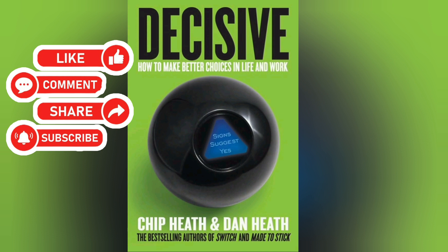Lesson 1: Decisions aren't binary — always think in opportunity costs. How many times has this happened? On Wednesday, someone starts talking about a party on Friday, and by Thursday, everyone's invited, including you. Now you have to decide what to do. Interestingly, how we decide something like this often ends with us trying to answer some variant of this question: Should I go to Jake's party or not? The problem with making decisions like this is that it's a binary approach — you only consider two options, yes and no.